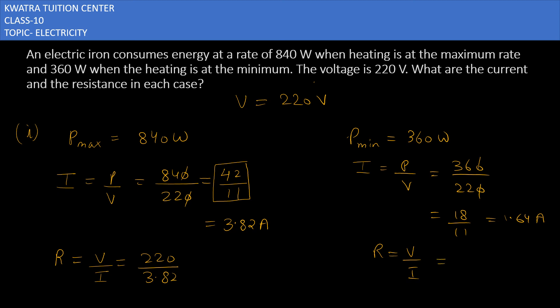Then in the second one, it will be V over I again, 220 over 18 over 11. Just find the value, substitute, reduce it, and put your answer in the comment section. Now moving to the next one.